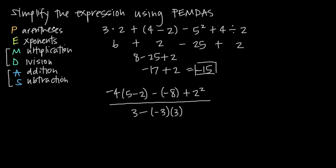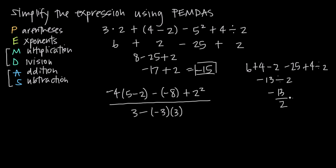If we don't use PEMDAS correctly and just go left to right, we get the wrong answer. For example, going left to right: 3 times 2 is 6, plus 4 is 10, minus 2 is 8, minus 25 is negative 17, plus 4 is negative 13, then divided by 2 gives negative 13 over 2 — which is obviously wrong, since the correct answer is negative 15.